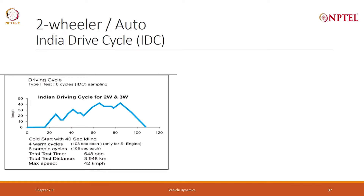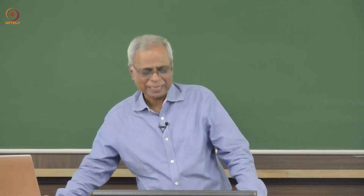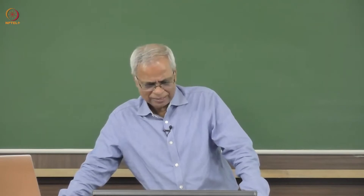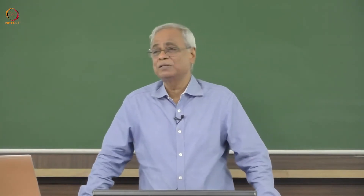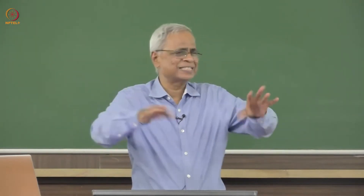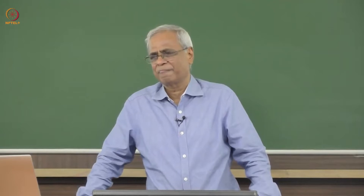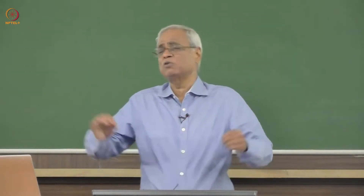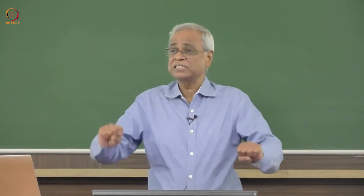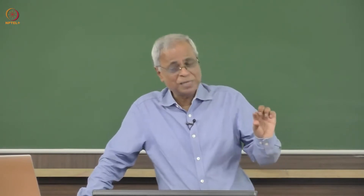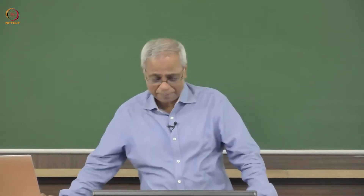Remember that these drive cycles have been defined for petrol engines. For electric vehicles, the same drive cycle is used, but certain things differ. For instance, idling — sitting at zero speed for 15 seconds — makes sense for a petrol engine because the engine keeps running and consuming energy. But in an electric vehicle, during zero speed, you consume zero energy. Auxiliary loads like lights are never included in standard drive cycle measurements.